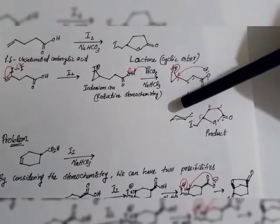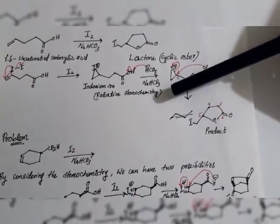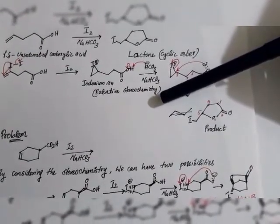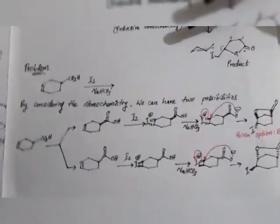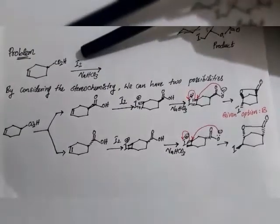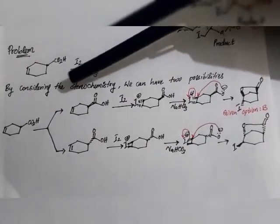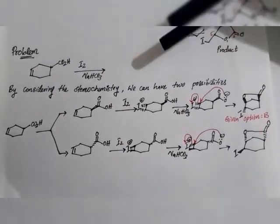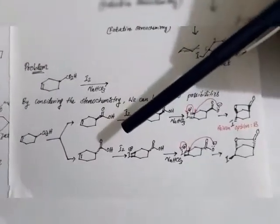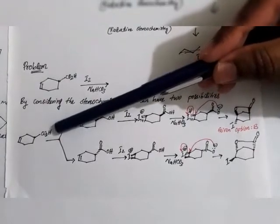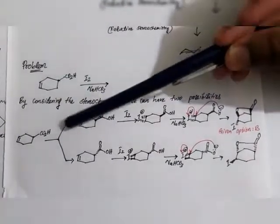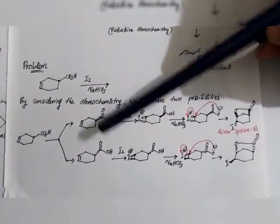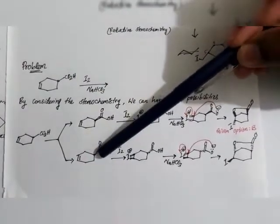Here we discussed only relative stereochemistry. For the given problem, we need to consider stereochemistry in detail. We will consider two possibilities: the carboxylic group in wedge — above the plane of paper — and the carboxylic group below the plane of paper.